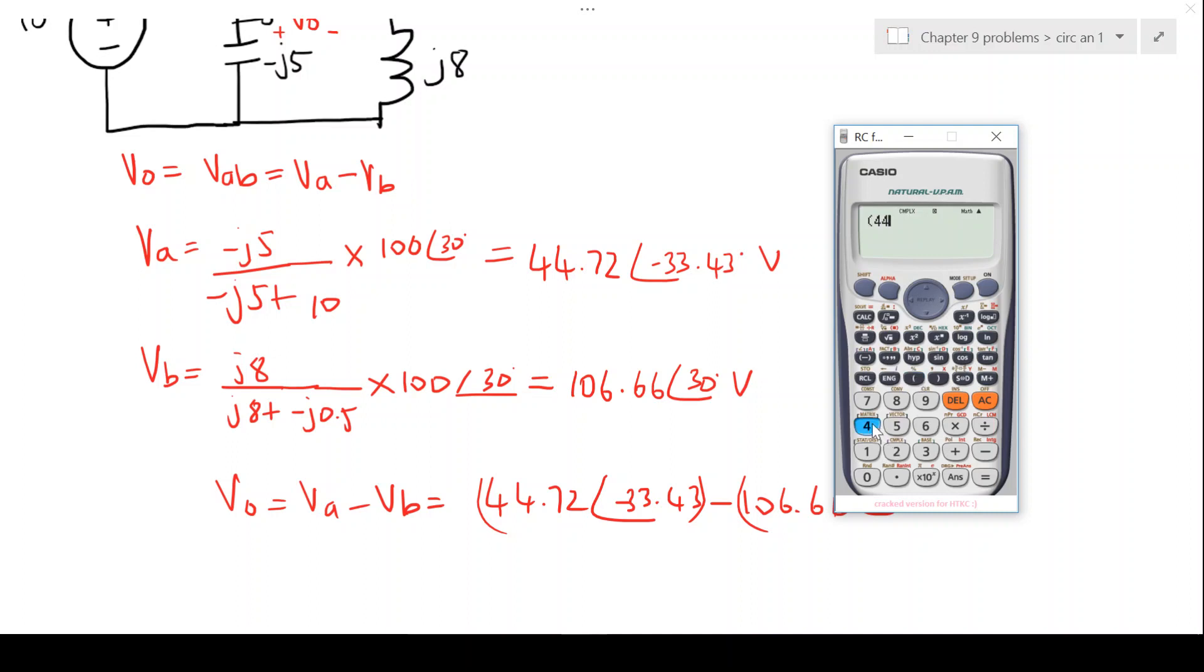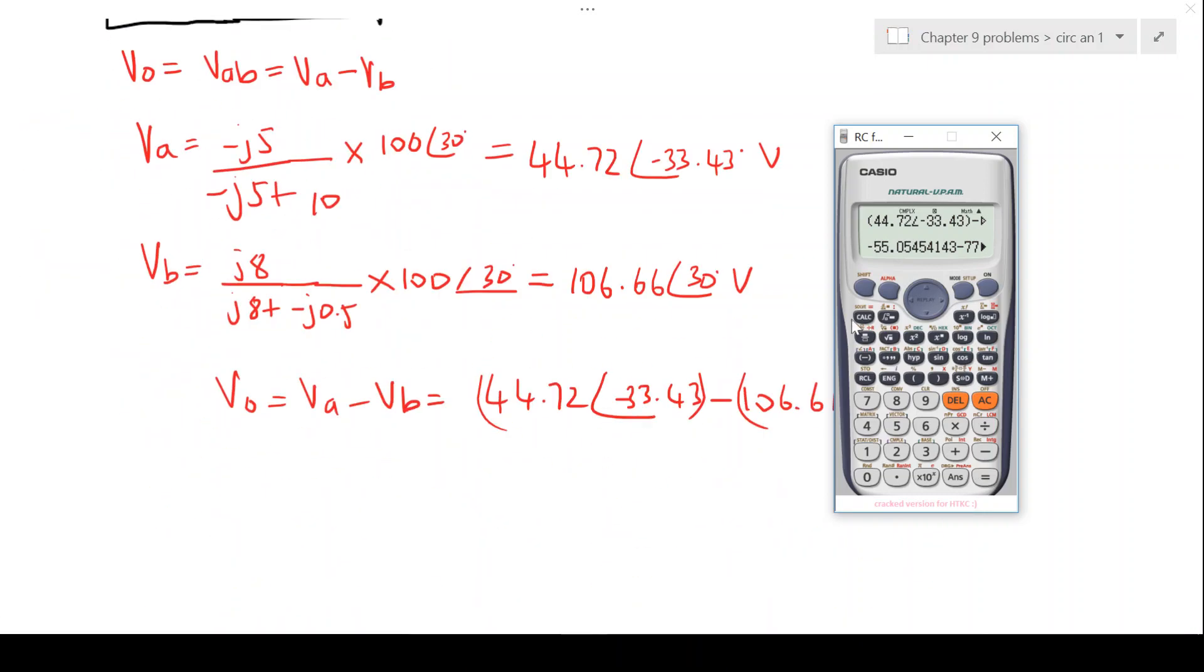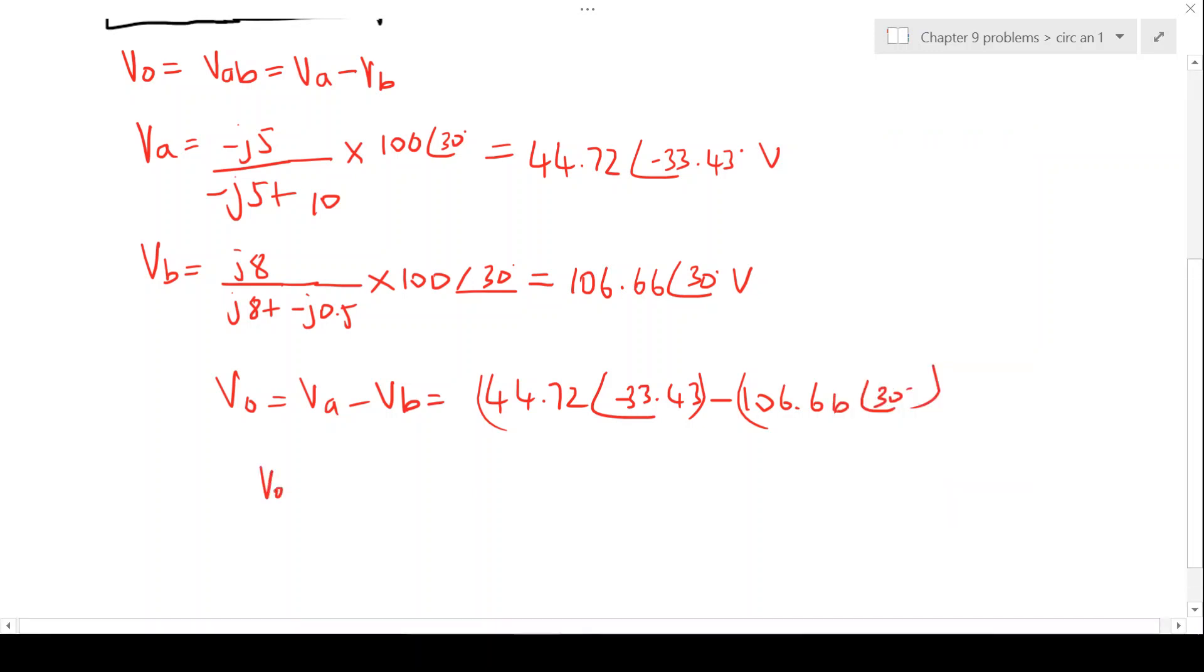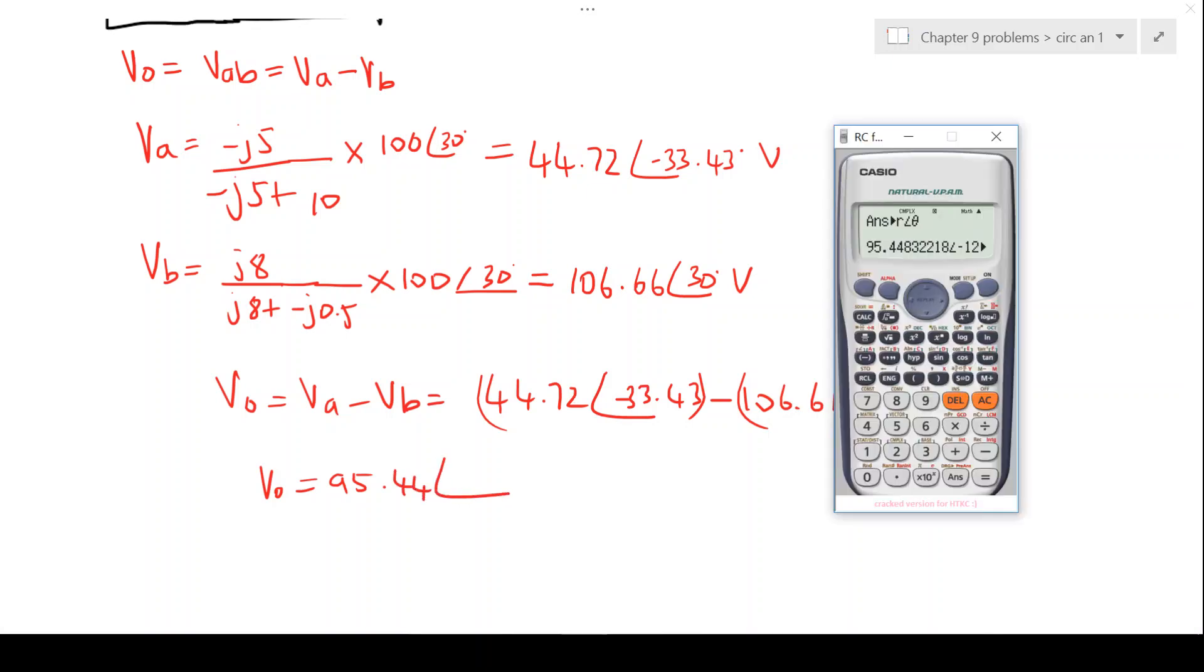So we'll say 44.72, that's an angle of negative 33.43 minus the answer that we have. And that gives us an answer. This was in polar form, we wanted to get this in polar form. And that gives us a value of 95.44 at an angle of minus 125.22.